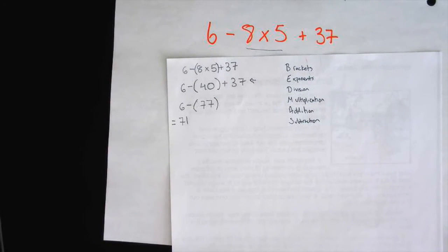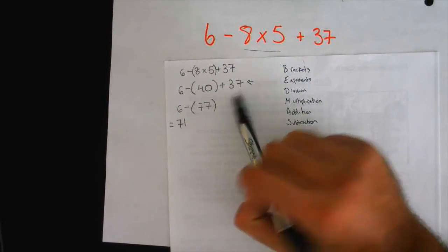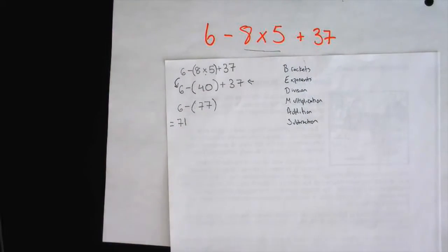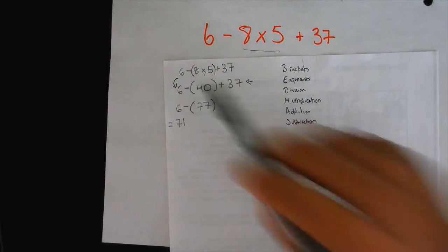Do you mean 40 plus 37 or just... No, I'm just talking about this step right here. Is this step right here, how they got from here to here, is this correct? Yes. Okay, it is correct because they did the multiplication first, right? Perfect.